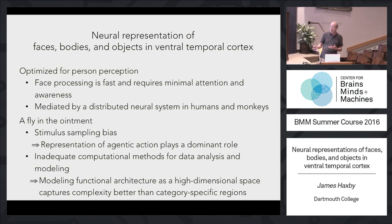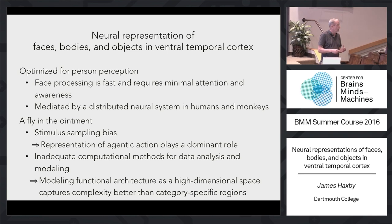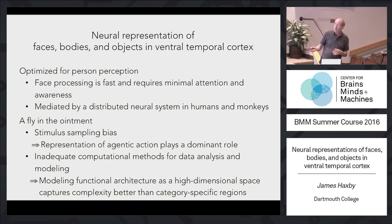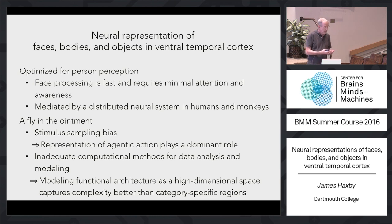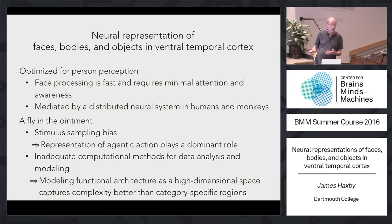Then I'm going to talk about how there are some problems with these conventional models — I call it a fly in the ointment. Specifically, I'll talk about a stimulus sampling bias: the studies that have been done use still images of a limited variety of stimuli, and how that has impacted our understanding of the ventral visual pathway. And then I'll discuss computational methods and the role of decoding.